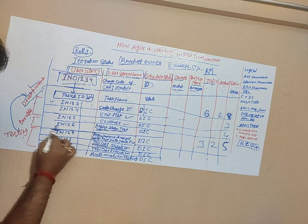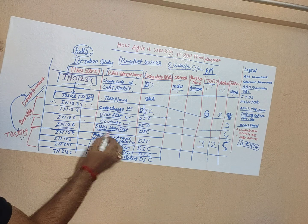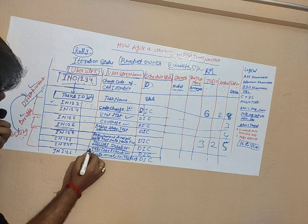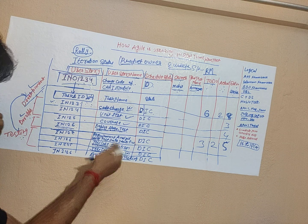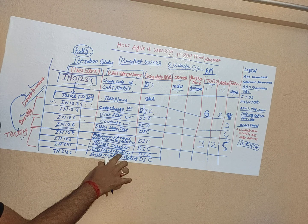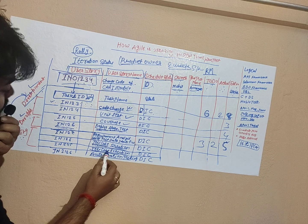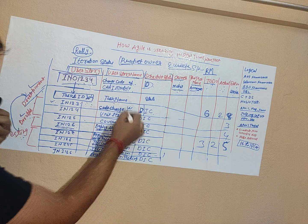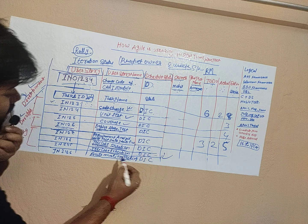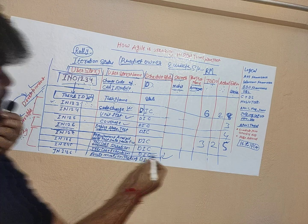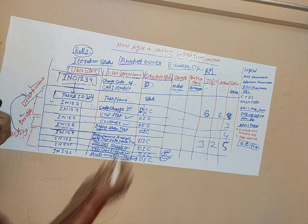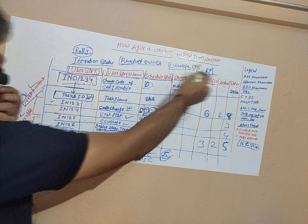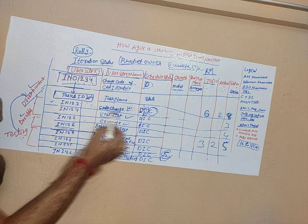Once development is complete, DevOps will deploy the code to the test environment and stage environment. Then we start test execution. If a defect is found, we assign it to the developer who works on a fix. If no defect is found, test execution is completed. If time allows we can also do automation. The states are: defined, in-progress, and complete.